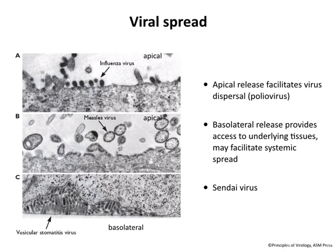Measles virus also buds apically, which is very good for transmission. Vesicular stomatitis virus, by contrast, buds from the basolateral surface, and when you infect animals with this virus, the virus spreads systemically. Sendai virus, a paramyxovirus related to measles, buds apically; mice develop a respiratory infection. But you can make a mutation in the glycoprotein so the virus only buds basolaterally, and when you infect mice with that variant, the virus goes systemic. Just giving it the ability to bud from the bottom makes a big difference.